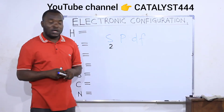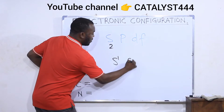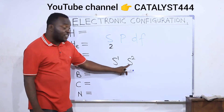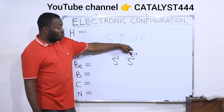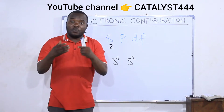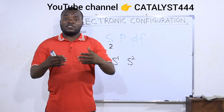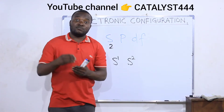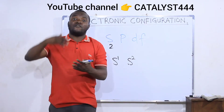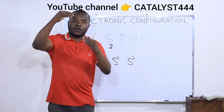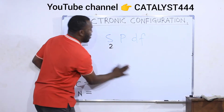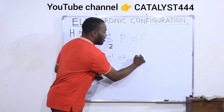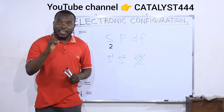The s orbital cannot carry more than two electrons. You can have s raised to power one, meaning the s orbital is carrying one electron, or s raised to power two, meaning it is carrying two electrons — the power shows the number of electrons the orbital is carrying. Any number greater than two for s is wrong; s carries a maximum of two.